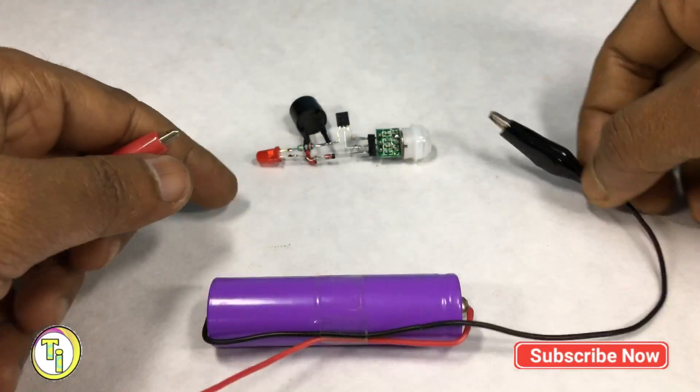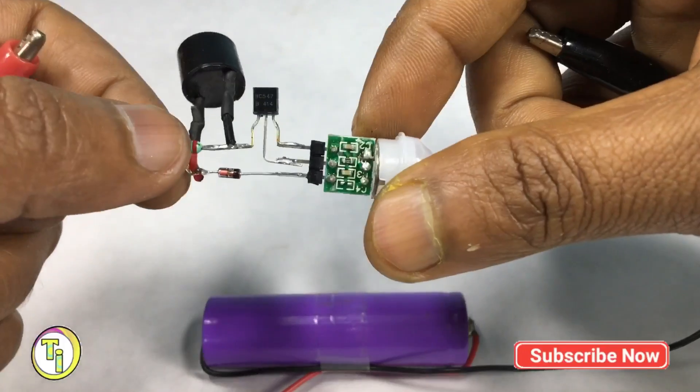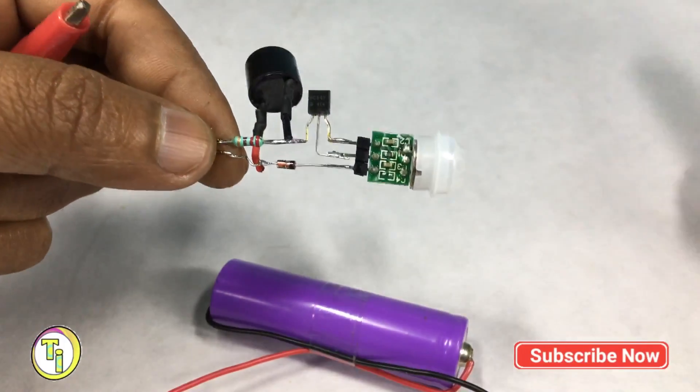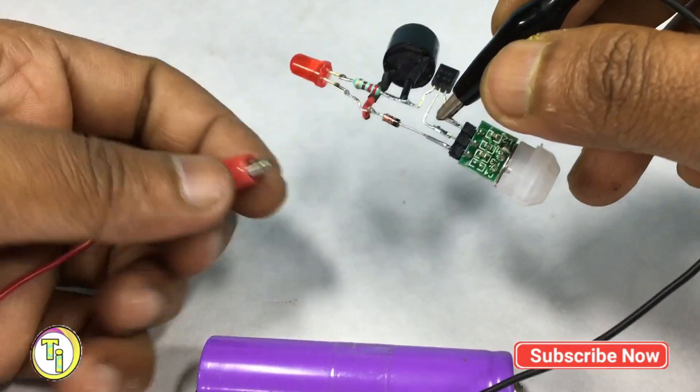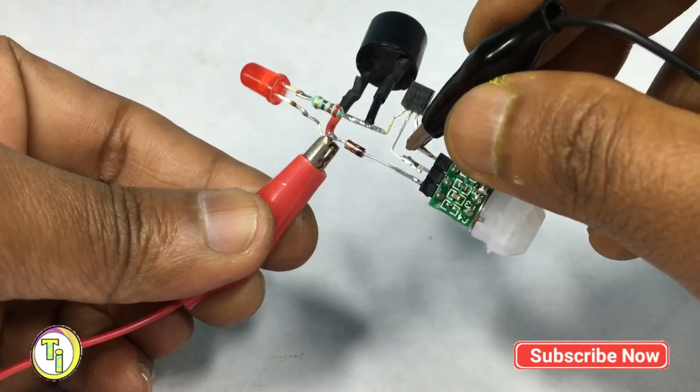Connect the lithium-ion battery to power the circuit, negative to the emitter and positive to the Zener anode.